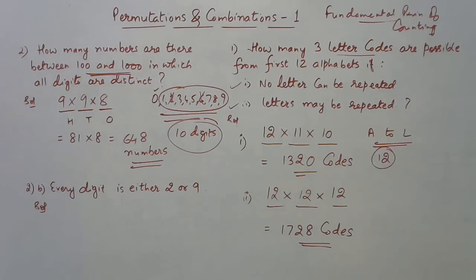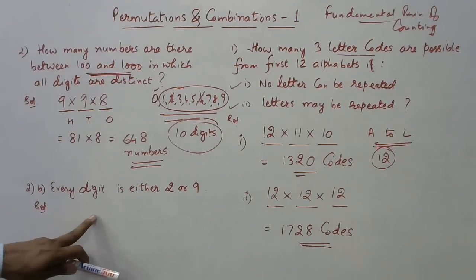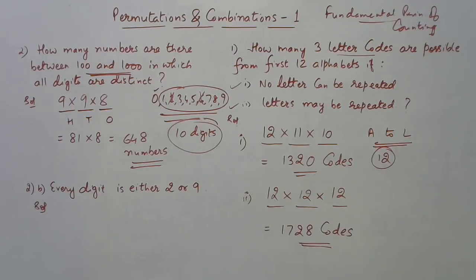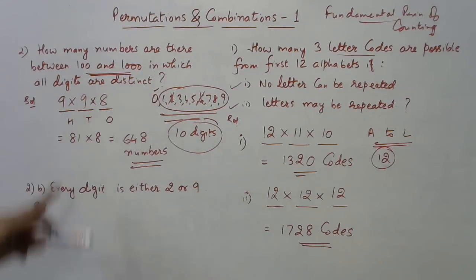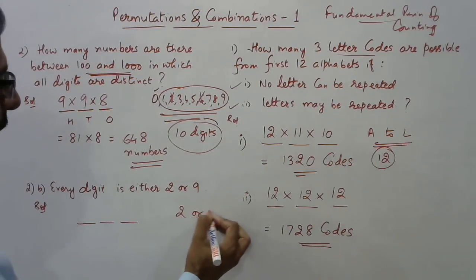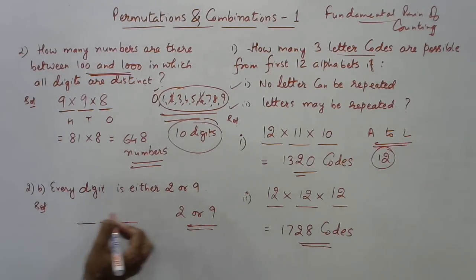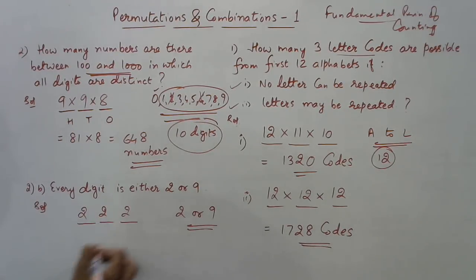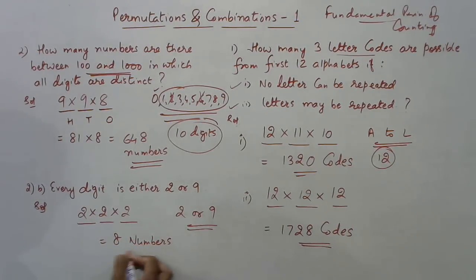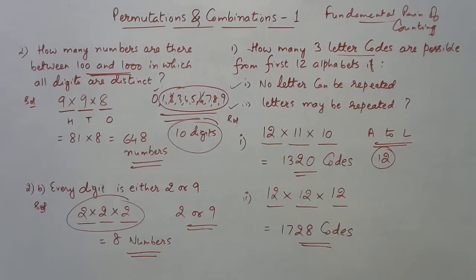Now for part B of question 2: find the total numbers between 100 and 1000 in which every digit is either 2 or 9. Again these are three-digit numbers. Each of the three places can only be filled with 2 or 9, so there are 2 ways for each place. By the Fundamental Principle of Counting: 2 × 2 × 2 = 8 numbers are possible between 100 and 1000 where every digit is either 2 or 9.